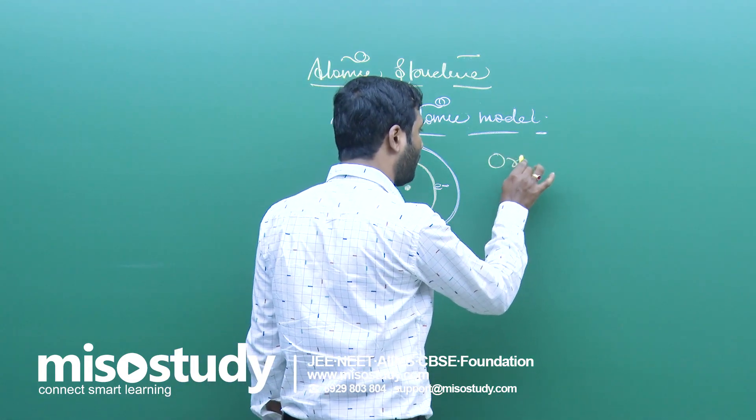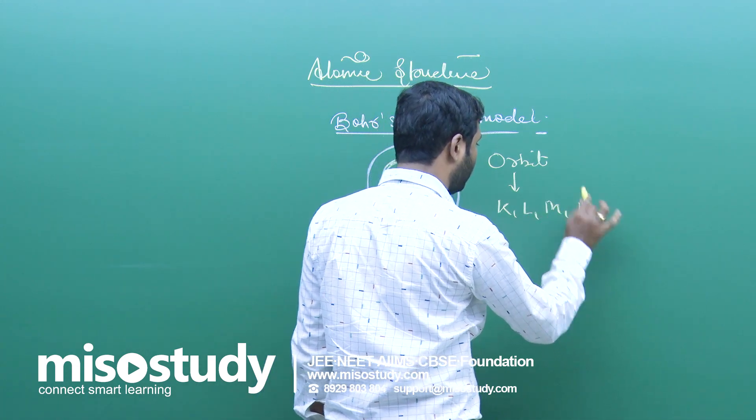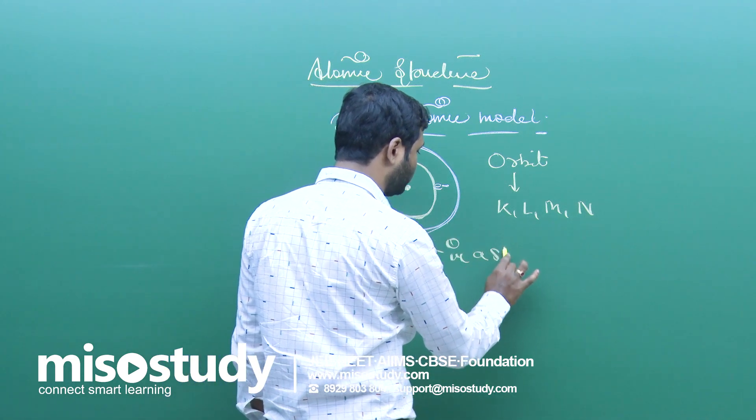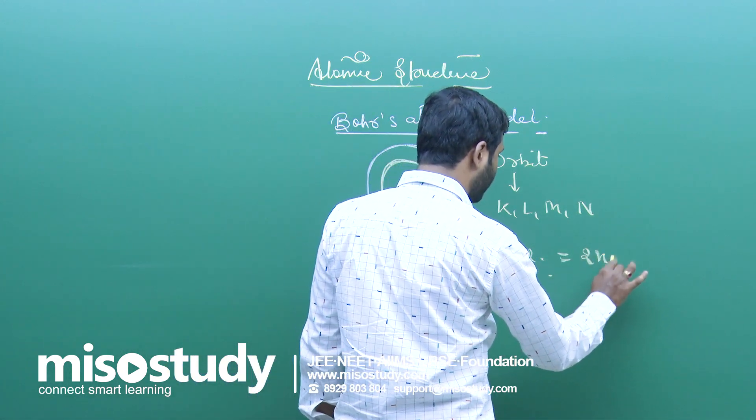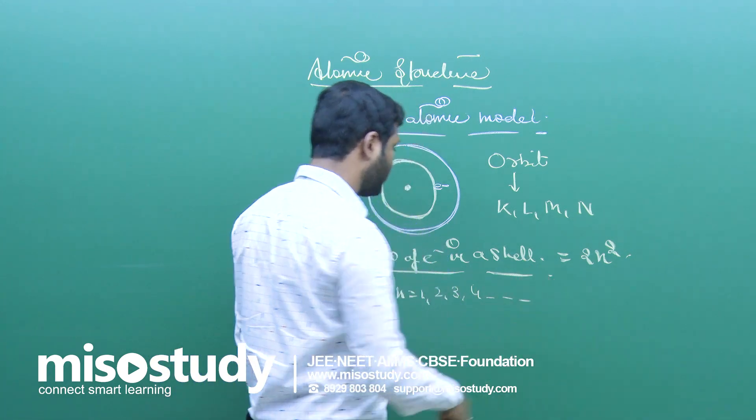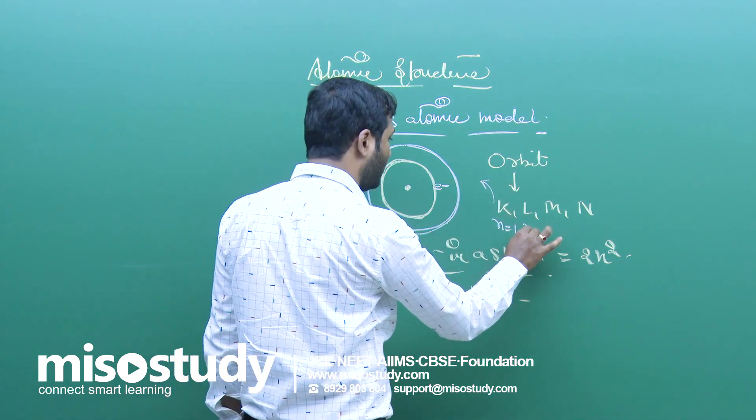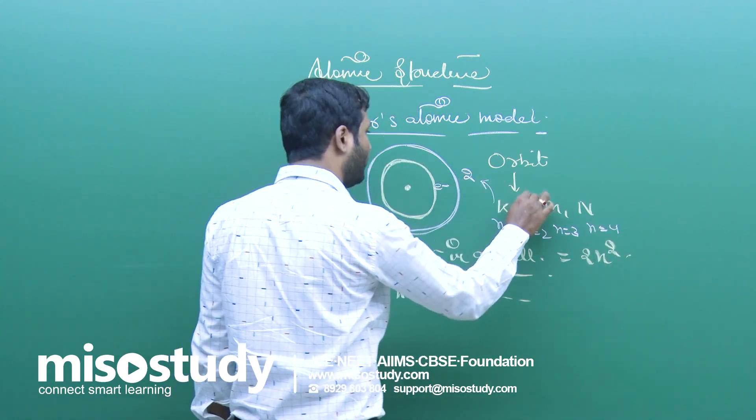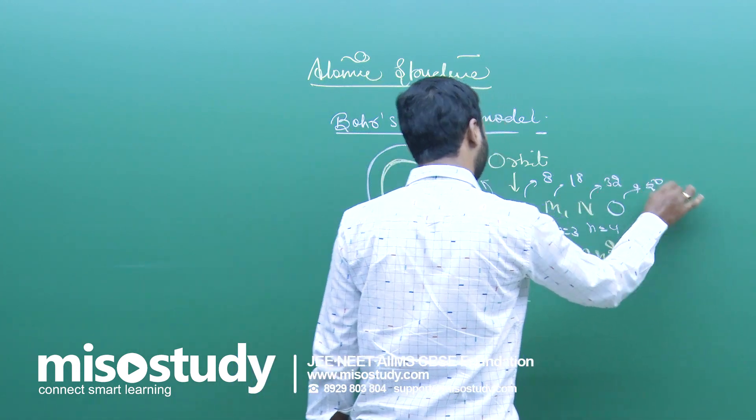That is the introduction of orbit here: K, L, M, N. Now, number of electrons in a shell equal to 2N², where N is equal to 1, 2, 3, 4. For K, number of electron will be 2, N equals 1 here. N equals 2 here, N equals 3 here, N equals 4 here. We know 2, 8, 18, and 32. And if I consider O also, that is 50 electrons.